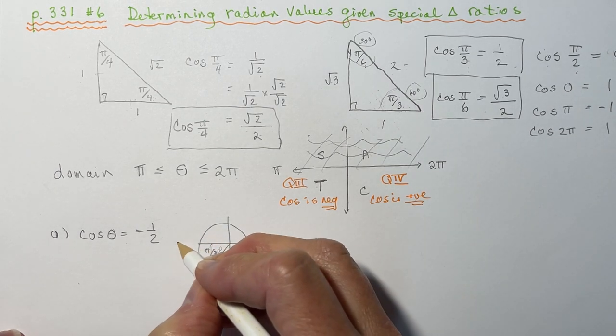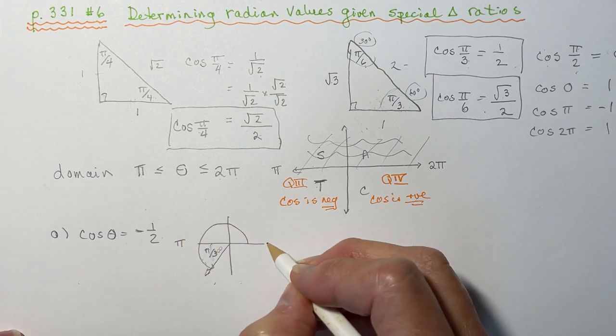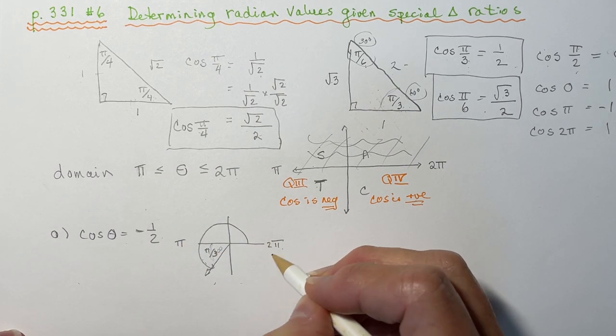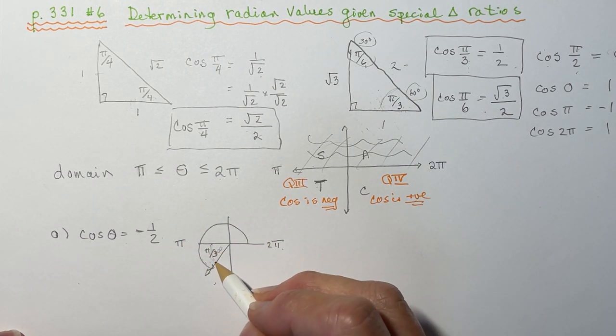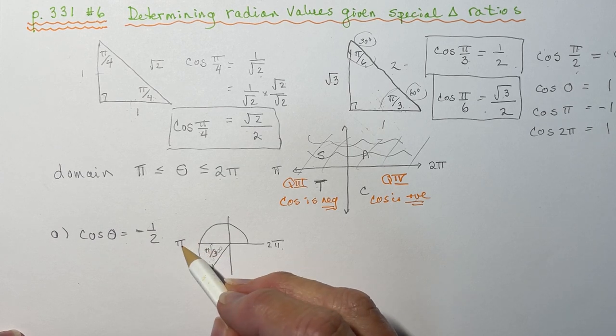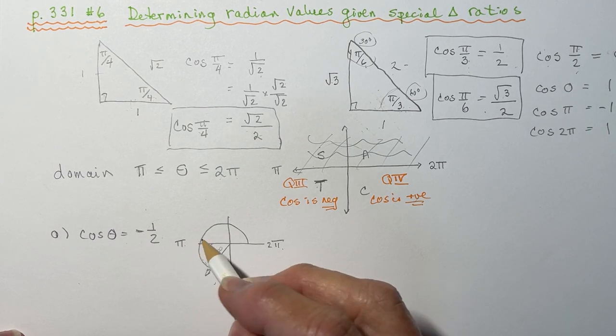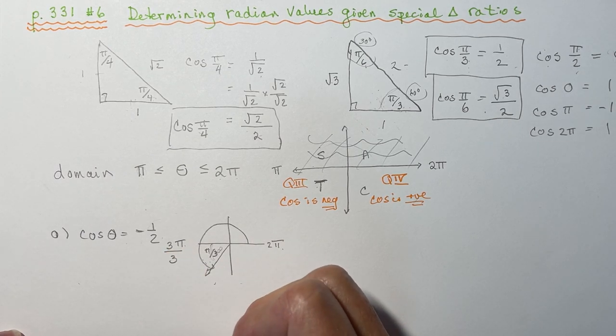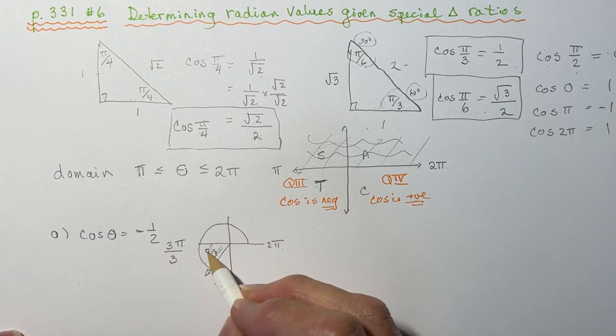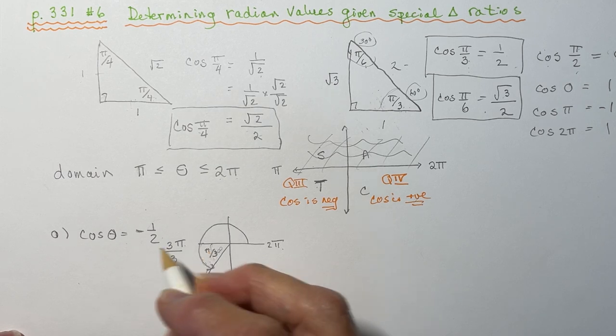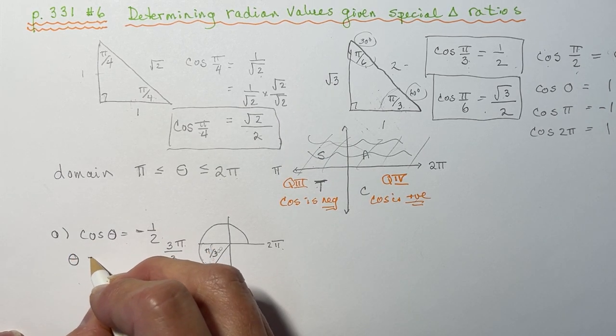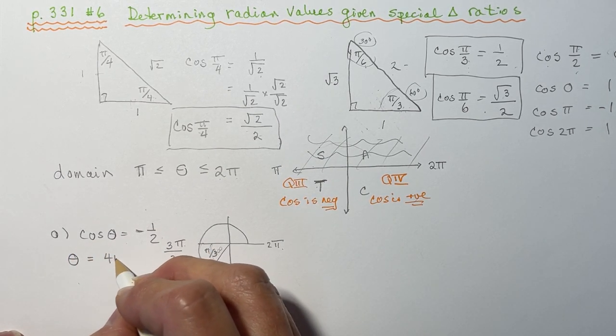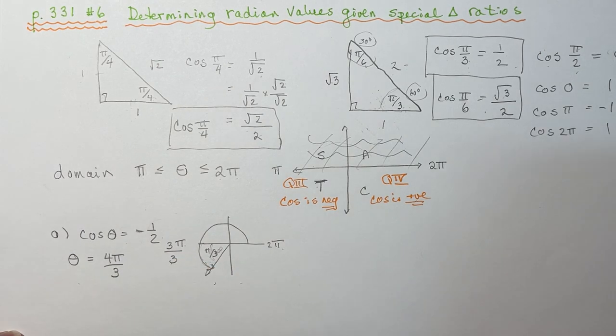So again, I'm going to write pi here and 2 pi here. Now because I'm adding pi over 3, it makes sense for me to write pi as 3 pi over 3, which is just 1 pi. But 3 pi over 3 plus 1 more pi over 3, that means theta has to be equal to 4 pi over 3. Now that was easy, wasn't it?